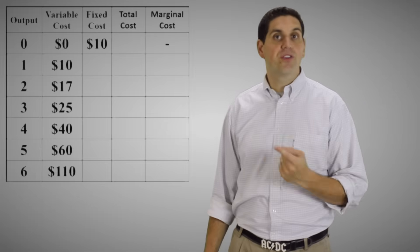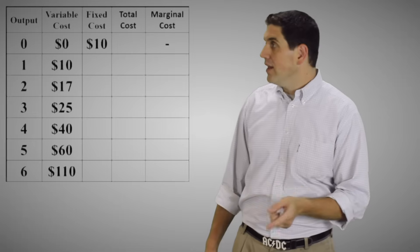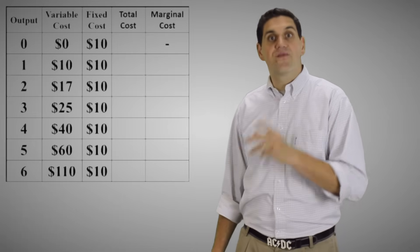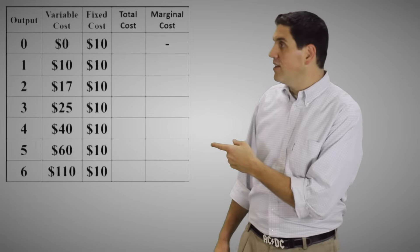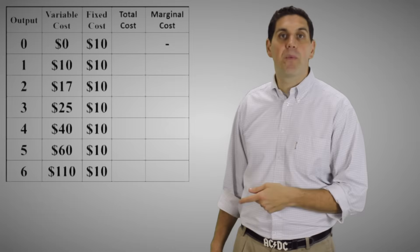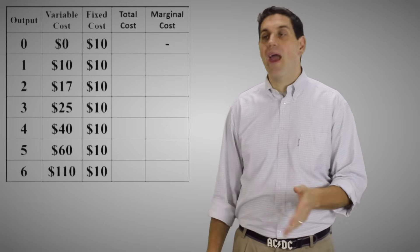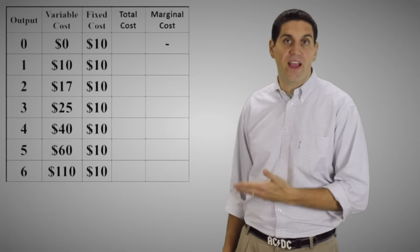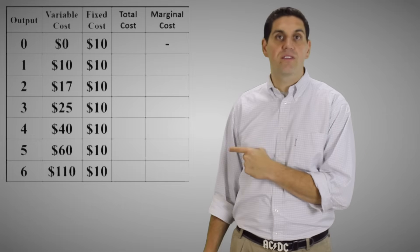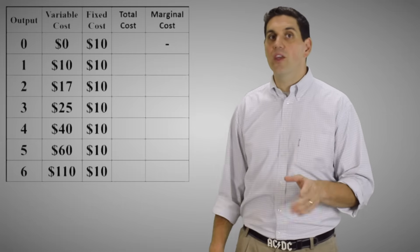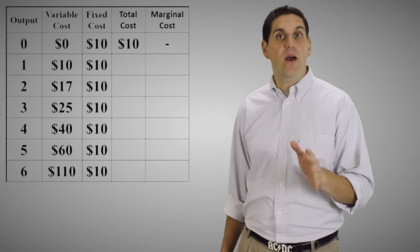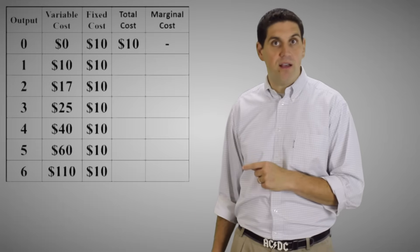What's the fixed cost of producing one unit? Well, it's $10. For two units it's $10. For three units it's $10. Why? Because it's fixed — it doesn't matter how many units are produced, you still pay $10 fixed cost. Total cost is the variable plus the fixed cost. So when you produce nothing, you still have a total cost of $10. Remember, that's because you have to pay that fixed cost.